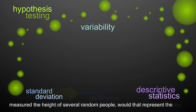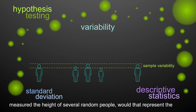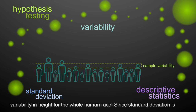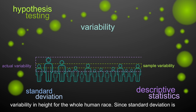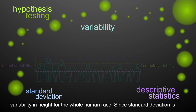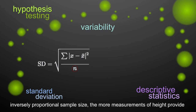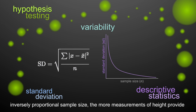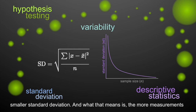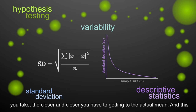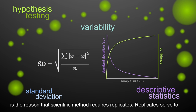For example, if you measured the height of several random people, would that represent the variability in height for the whole human race? Since standard deviation is inversely proportional to the sample size, the more measurements of height provide a smaller standard deviation. The more measurements you take, the closer you get to the actual mean — and this is the reason that scientific experiments require replicates.